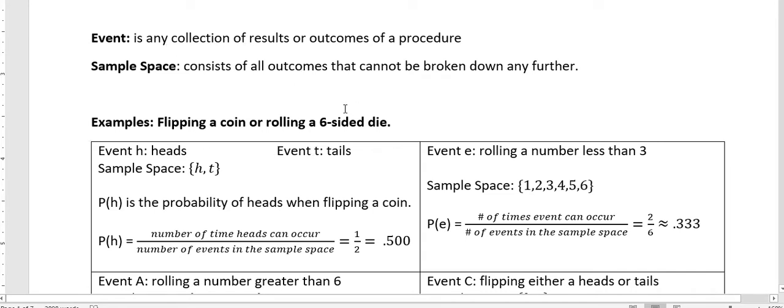So an event is a collection of results or outcomes. So I have one event that's a heads and one event that's a tails. My sample space is a collection of all of those. So my sample space is heads and tails for flipping a coin.